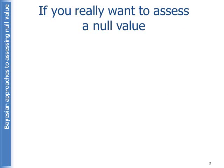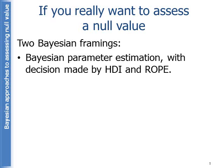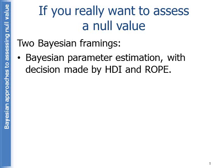Now, what do you do if you really want to assess a null value? There are two Bayesian framings. One is Bayesian parameter estimation, in which a decision is made by the HDI and a ROPE. The other Bayesian framing is Bayesian model comparison, with a decision made by a Bayes factor. I'm going to explain these two in the next few slides.